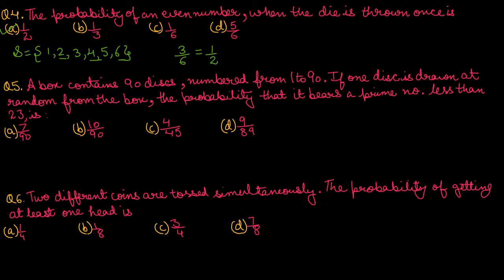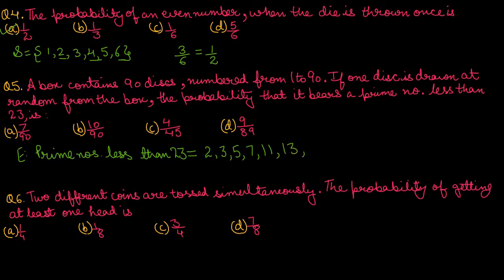Question number 5: A box contains 90 discs numbered 1 to 90. If one disc is drawn at random, find the probability that it bears a prime number less than 23. The prime numbers less than 23 are: 2, 3, 5, 7, 11, 13, 17, 19. That gives us 8 favorable cases. Total cases are 90. So probability is 8 upon 90, which simplifies to 4 upon 45. Option number C is correct.